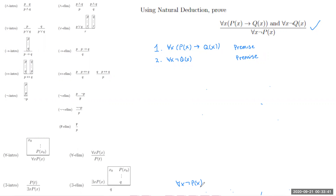We can extract a lot of information from our premises and our conclusion. Looking at our premises, we have two for-all statements, so we might think of doing a ∀-elim. We also see an implies, so maybe we want to do an →-elim. Looking at our conclusion, we also have a for-all, so maybe we want a ∀-intro. And we see not P(x) — since our premise has P(x) but no negation, maybe we should consider a ¬-intro.